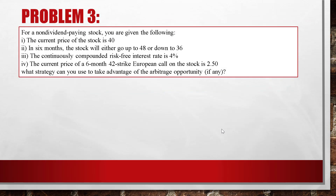Problem 3. For a non-dividend paying stock, you are given: the current price is 40, in 6 months the stock will go up to 48 or down to 36, the continuously compounded risk-free interest rate is 4%, and the current price of a 6-month 42-strike European call is 2.5. What strategy can you use to take advantage of the arbitrage opportunity, if any?